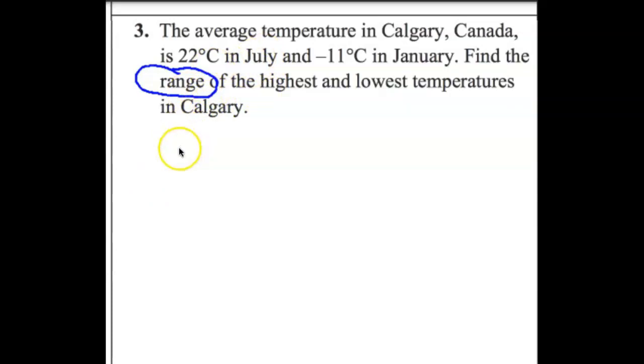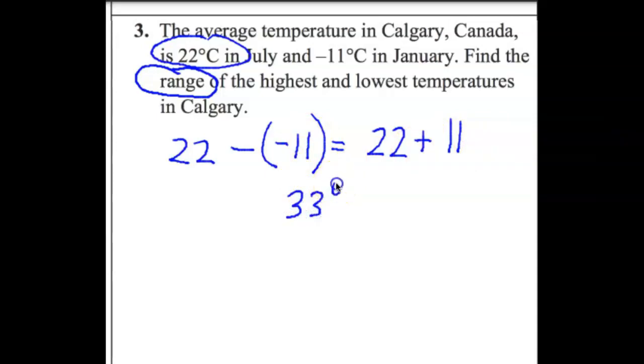That's correct. We're going to take the greatest value and subtract the least value. So the greatest value is going to be 22° and we're going to subtract the least value which is -11. So what is the equivalent expression if I change this into an addition problem? When we subtract integers, we add the opposite. So 22 plus what number? What is the opposite of -11? Very good, that is positive 11. So what is 22 + 11? That's correct, the answer is 33 degrees.